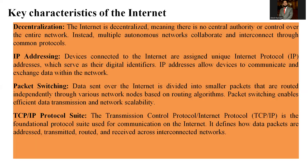Now, key characteristics of the Internet. First: decentralization. The Internet is decentralized, meaning there is no central authority or control over the entire network. Instead, multiple autonomous networks collaborate and interconnect. It is not a central authority — there is no single server that controls the entire world.